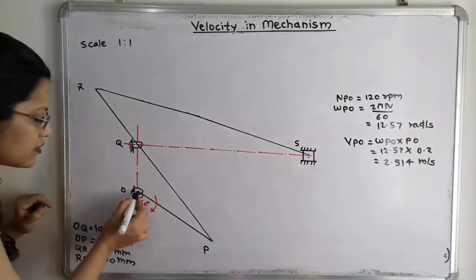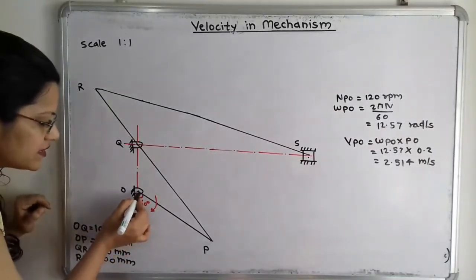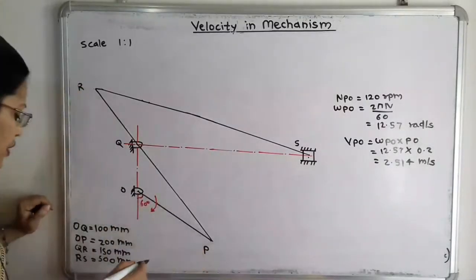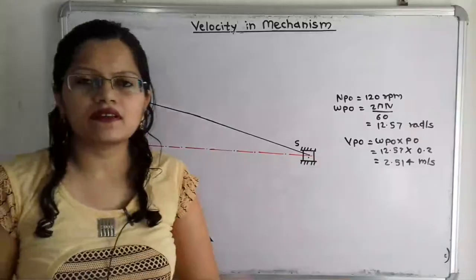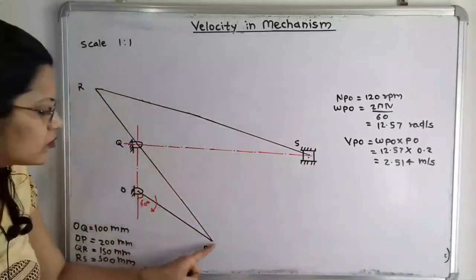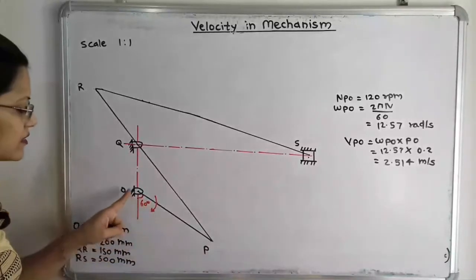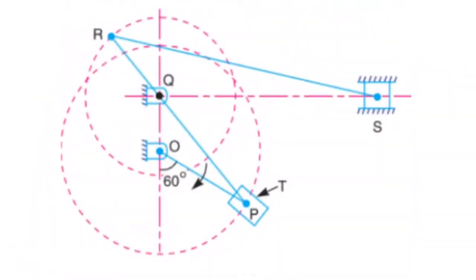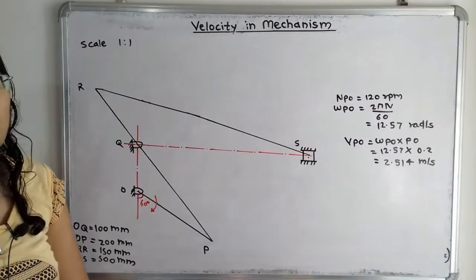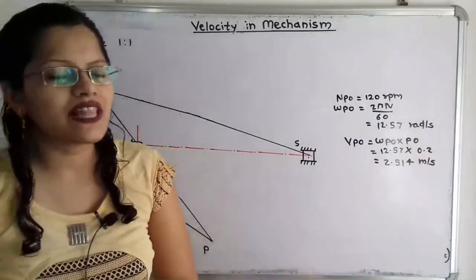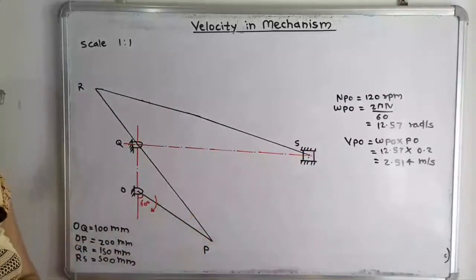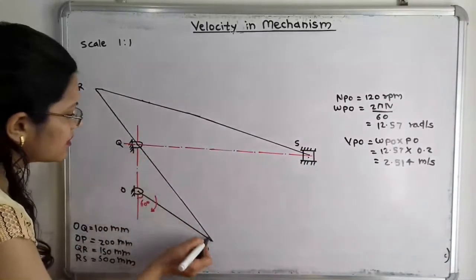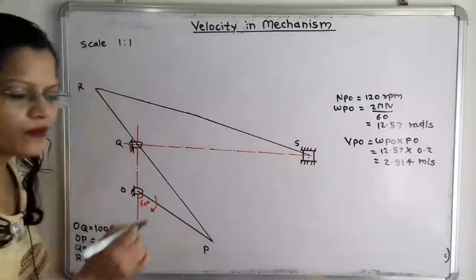With the vertical line passing through center O, we take a 60 degree angle and draw a line. OP is given as 200 mm, so we draw a 20 cm line. At the endpoint P, there is the slider T which is attached — the center point of T is at point P. The motion of this slider is along QT, so we draw the slider in the direction of the line joining point Q to point T.